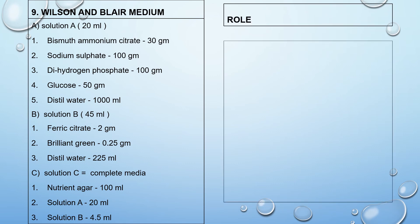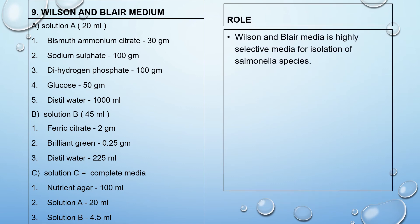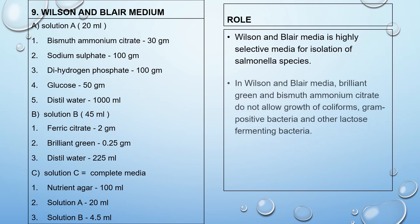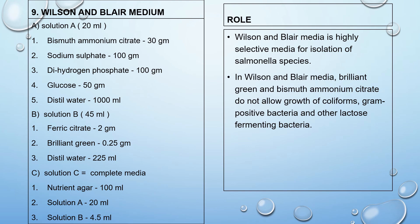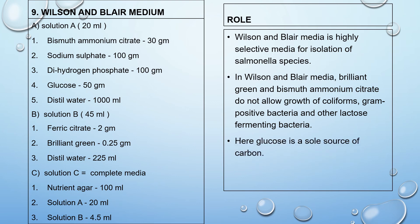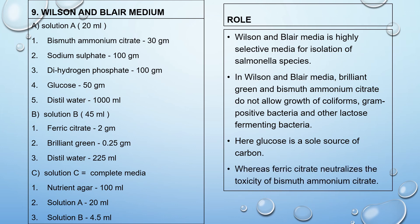Wilson and Blair medium is a highly selective medium for isolation of Salmonella species. Brilliant green and bismuth ammonium citrate do not allow the growth of coliforms, gram-positive bacteria, and other lactose-fermenting bacteria. Glucose is the sole source of carbon in this media, whereas ferric citrate neutralizes the toxicity of bismuth ammonium citrate.